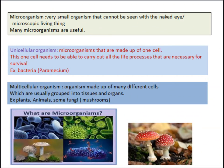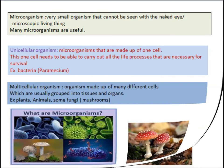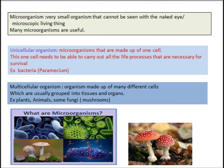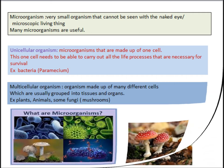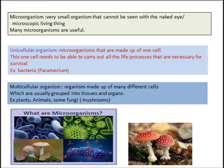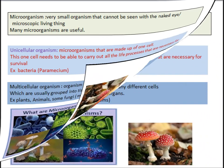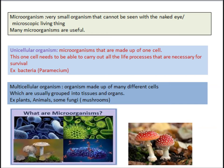Microorganisms are very small organisms that cannot be seen with the naked eye. That's why we call them microscopic organisms. Unicellular organisms are made up of one cell, and organisms made up of many different cells are called multicellular organisms. Plants, animals, and some fungi like mushrooms are multicellular organisms.